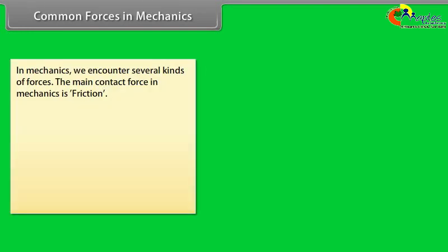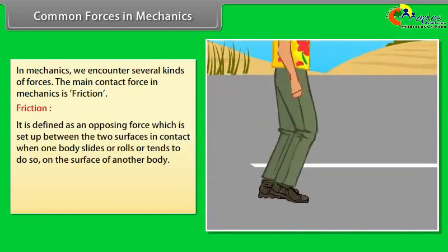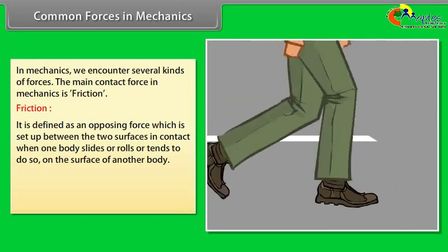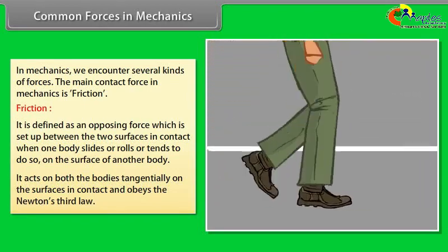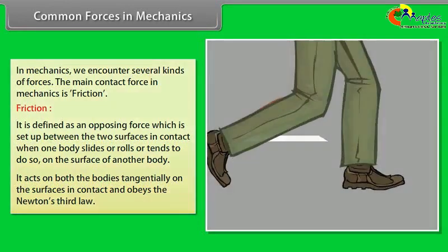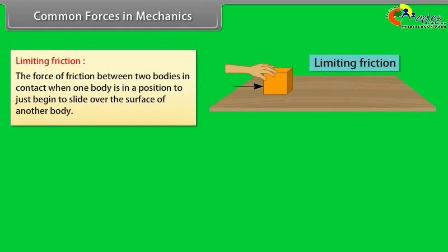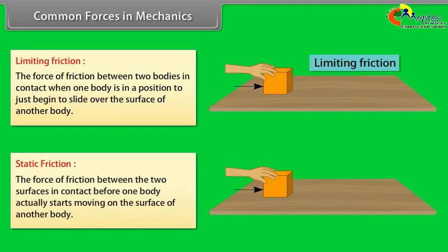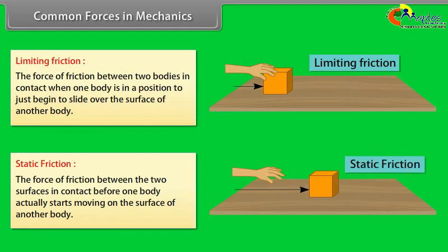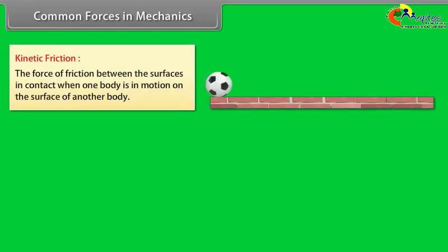In mechanics, the main contact force is friction. Friction is defined as an opposing force set up between two surfaces in contact when one body slides, rolls, or tends to do so on the surface of another. It acts tangentially and obeys Newton's third law. Limiting friction occurs when a body is about to begin sliding. Static friction acts before one body actually starts moving. Kinetic friction acts when one body is in motion on another surface.